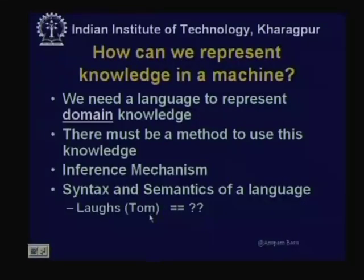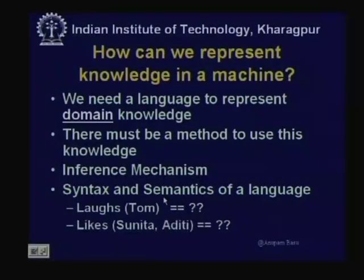Both syntax and semantics must be well defined in order to form a knowledge representation language. For example, if we write 'loves(Tom),' what does it mean? Does it mean Tom loves, or Tom is loved? There must be a clear meaning. Similarly, 'likes(Sunita, Aditi)' — does Sunita like Aditi, or does Aditi like Sunita? There must be a specific interpretation given, so that a statement like 'likes(Sunita, Aditi)' can qualify as a valid knowledge representation in the language.